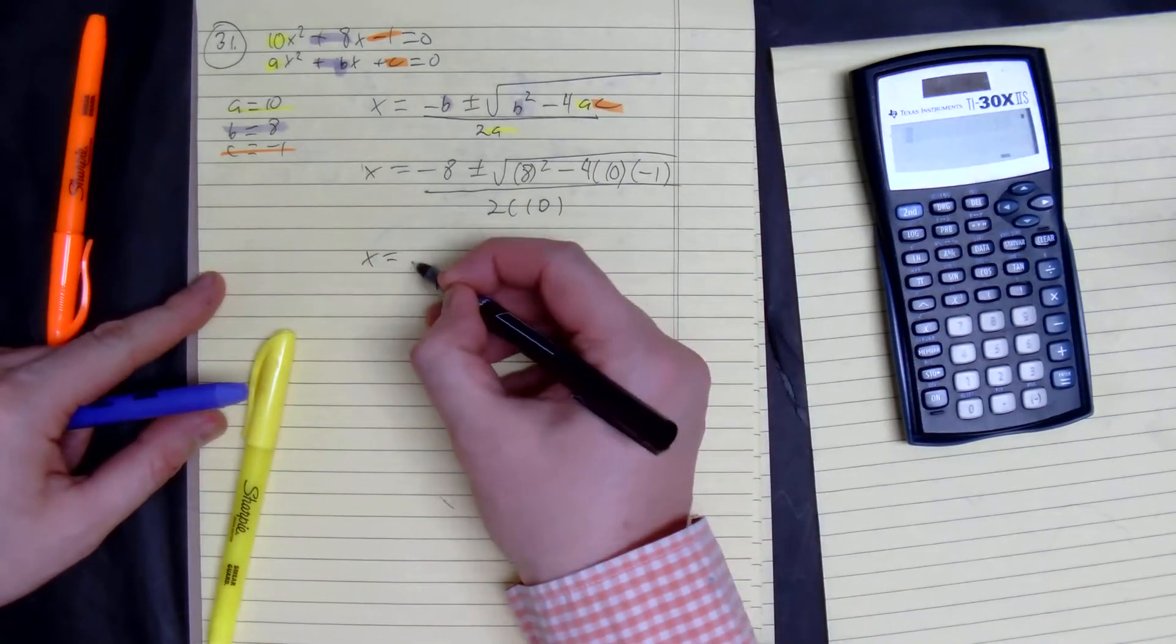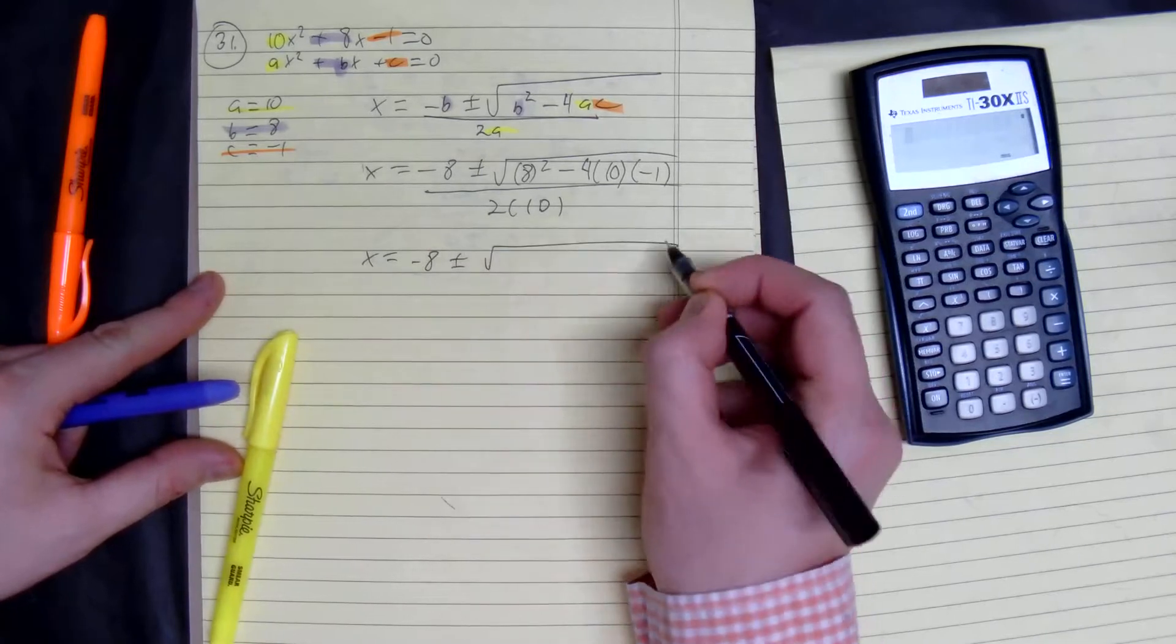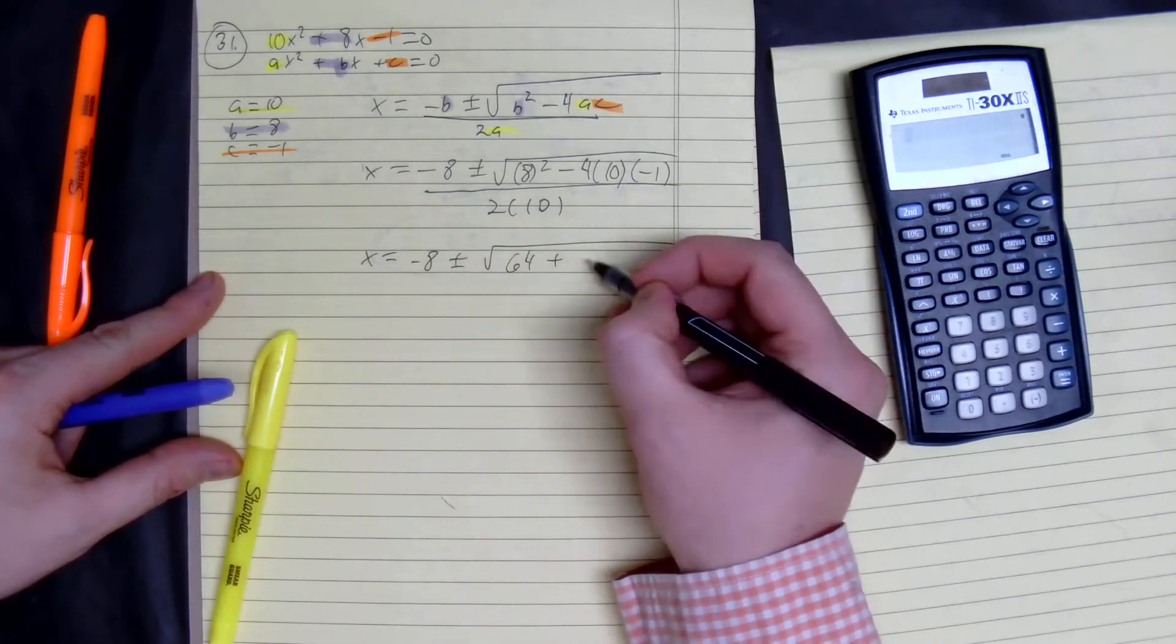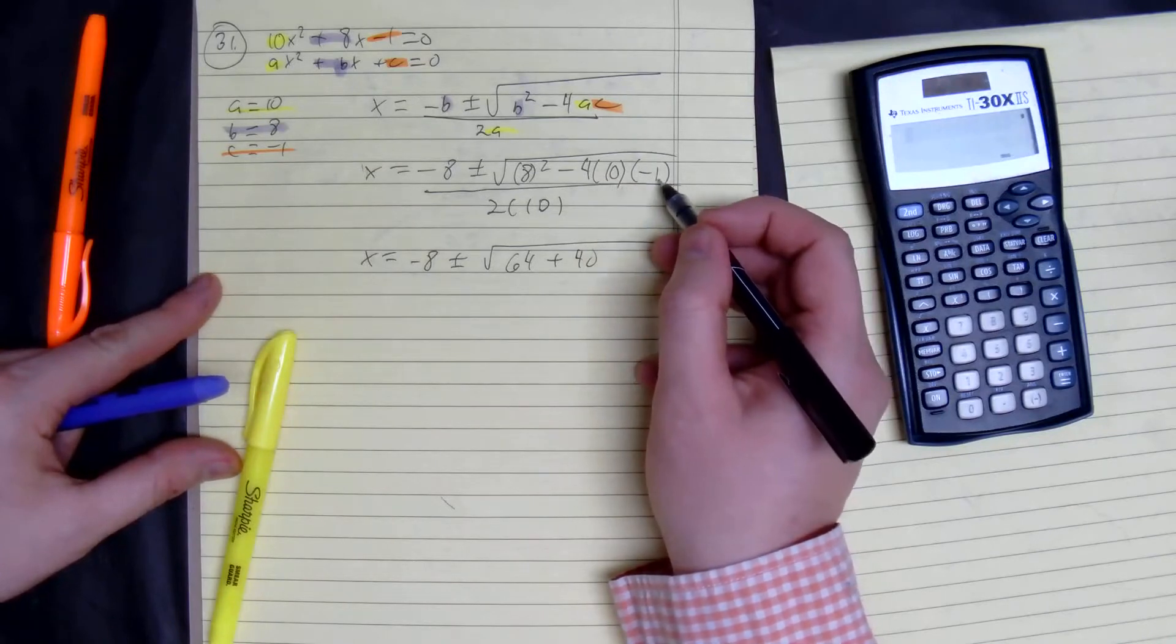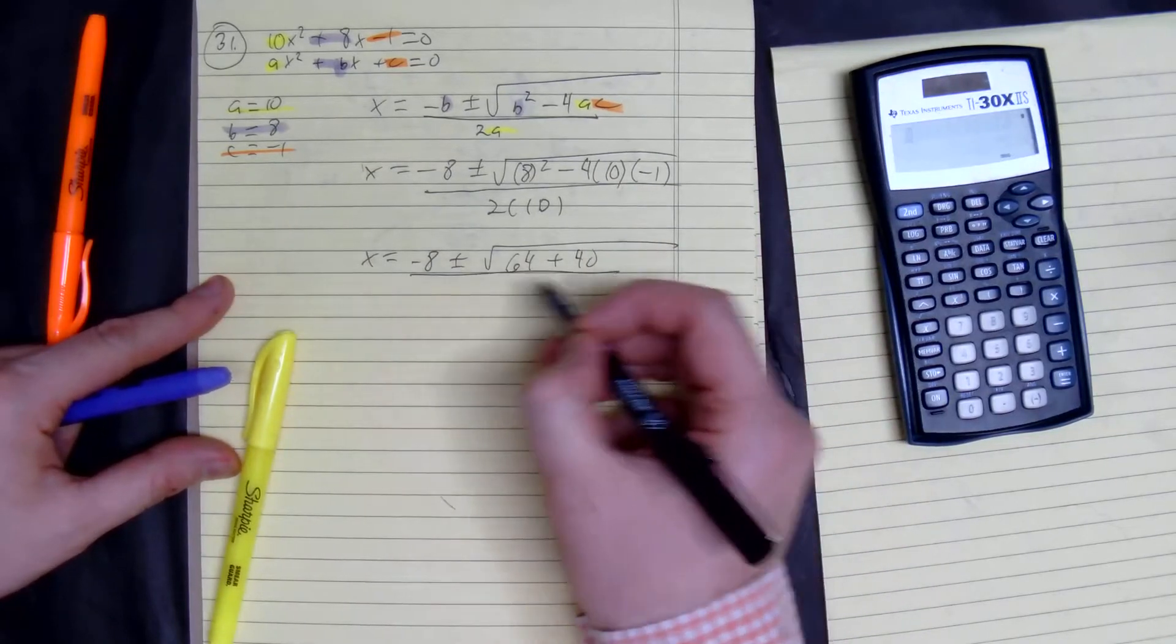So we get x equals negative 8 plus or minus the square root of 64 plus 40, because negative 4 times 10 is negative 40. Negative 40 times negative 1 is 40, and we divide it by 20.